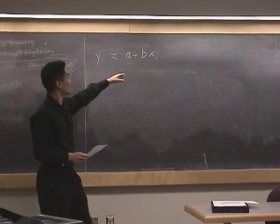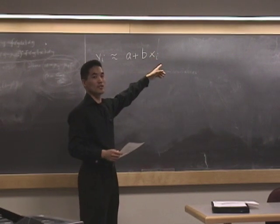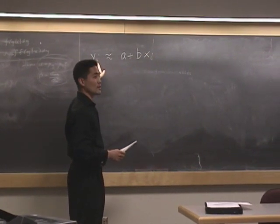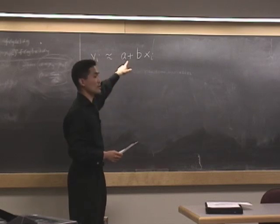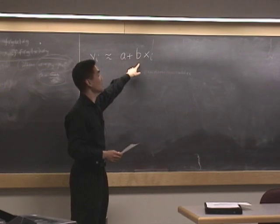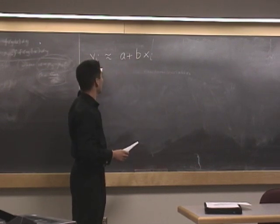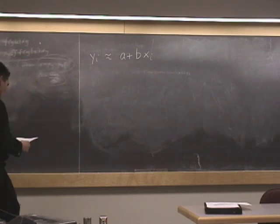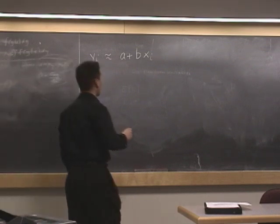So given x1, x2, x3, and so on, and y1, y2, these ordered pairs, the question was how to fit a linear model of this form to the data, which is to find the parameters a and b such that yi is approximately given by a plus b xi.